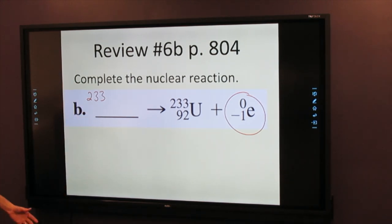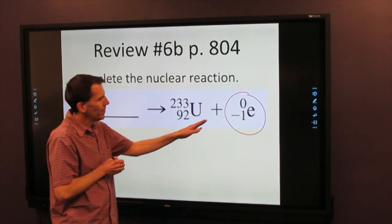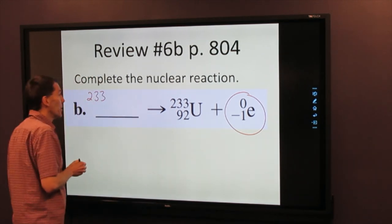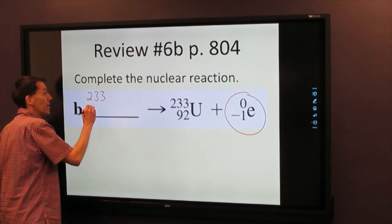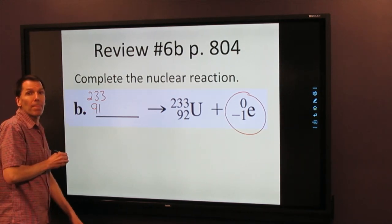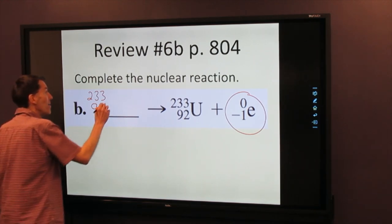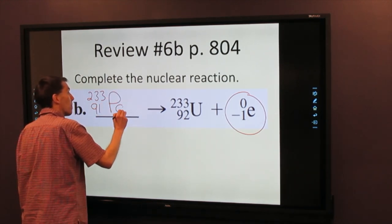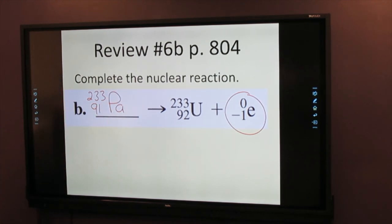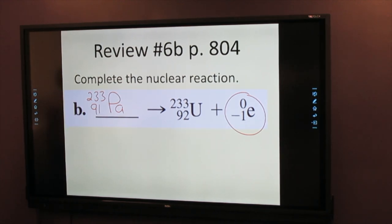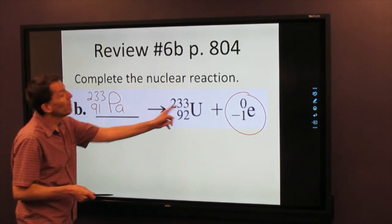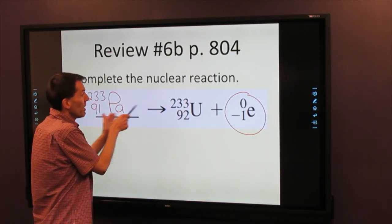The atomic number has to work out mathematically. And so we've got a 92 and a negative one. And so if we combine those together, this will be 91. On your periodic table, that is element PA. The name of that is proactinium. And so in this case, just like our beta decay in part one, element number goes up one when you have beta decay. So we went from 91 to 92.